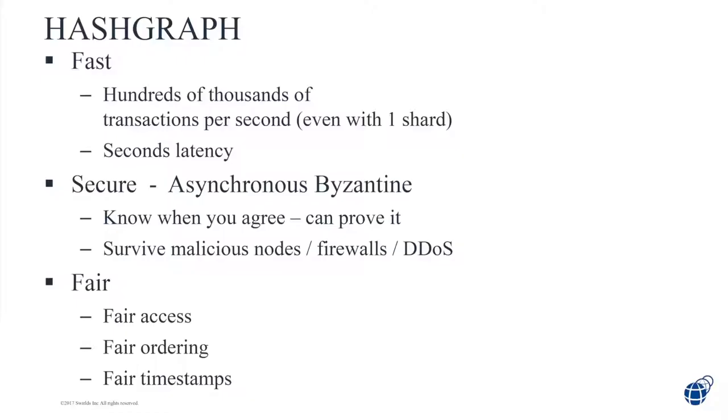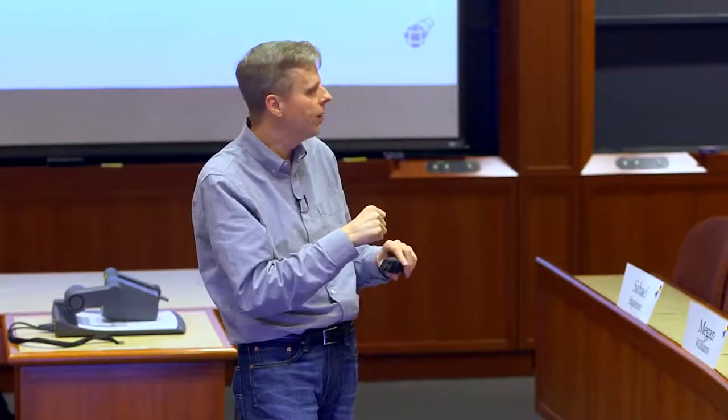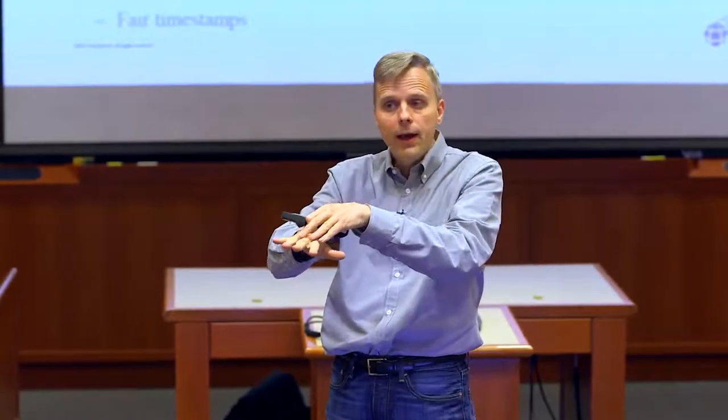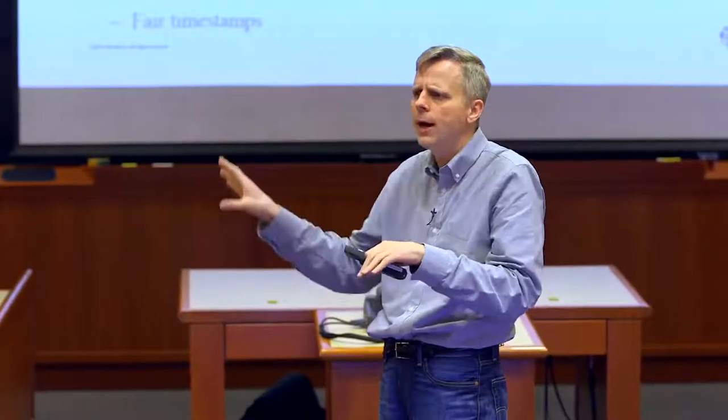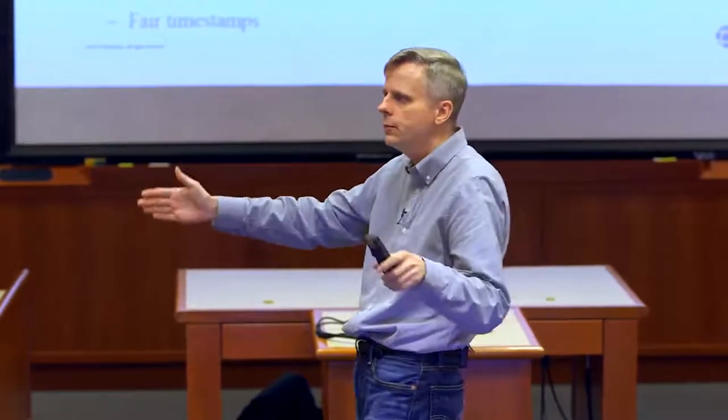So we have fairness of access, fairness of ordering, and fairness of timestamps. When we put a timestamp on your transaction, it will be something the entire community helped contribute to. For example, in legal contracts, there might be a clause saying you have to send information before noon on Tuesday. When you send the information, it gets a timestamp you can trust because the community as a whole contributed to it. You could go to a court and say, 'yes, I really did do it by noon on Tuesday' — and it wasn't just the opinion of one miner.